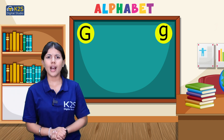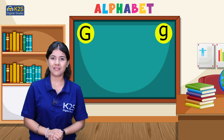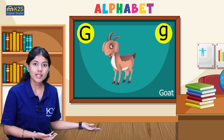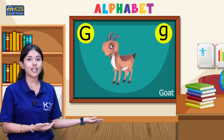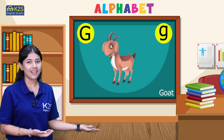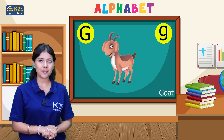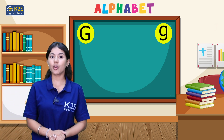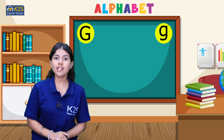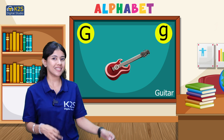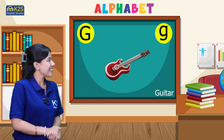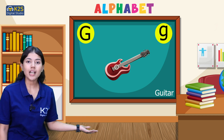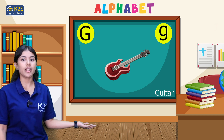Now another animal — a goat. Goat starts with letter G. The last word we are having from letter G is guitar. Guitar starts from letter G.